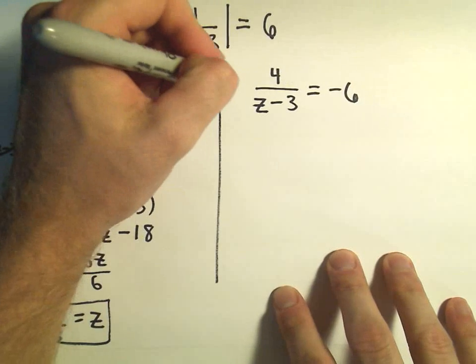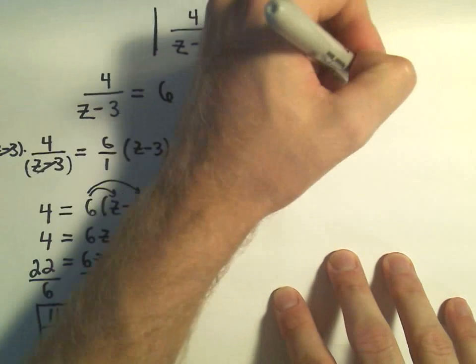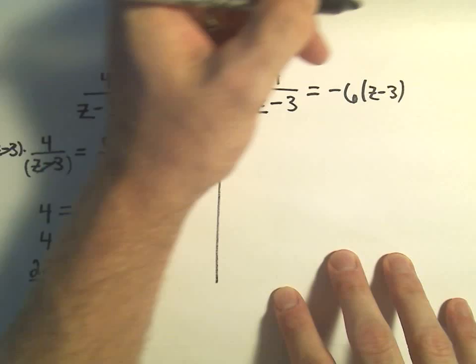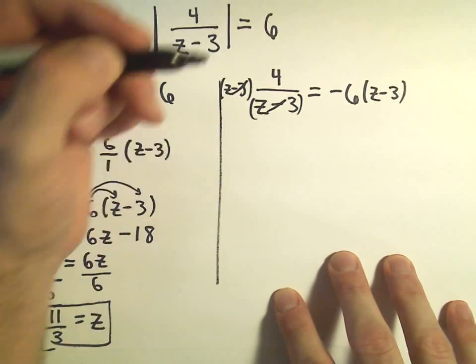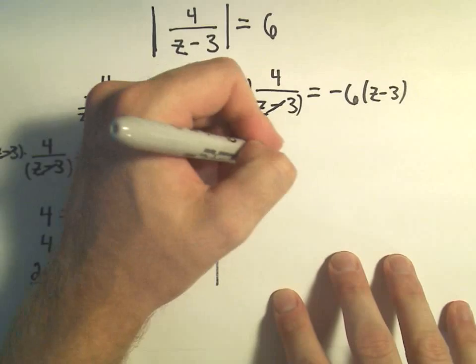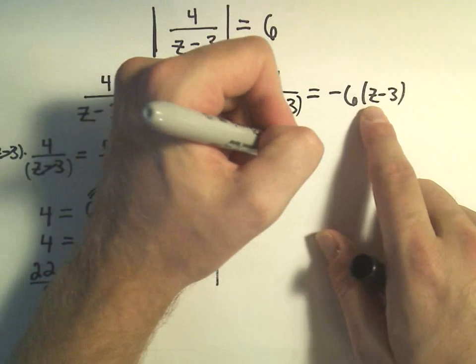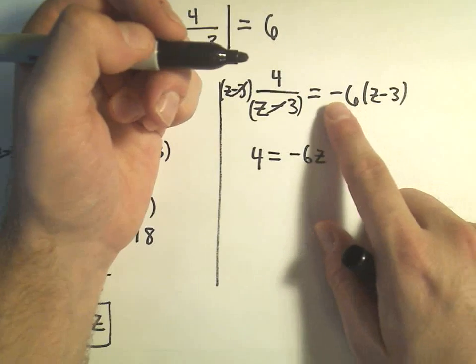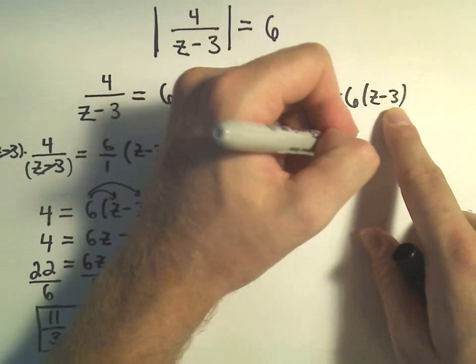And then the other solution, I'm going to do the same thing, just multiply both sides by z minus 3. So on the left, the z minus 3's would cancel, leaving me with positive 4. Then I would have negative 6 times z, which is negative 6z. Negative 6 times negative 3 is positive 18.